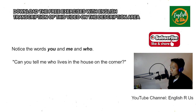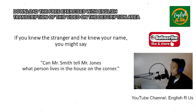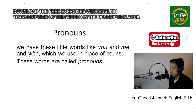You cannot call the stranger by name, or you do not know his name, and hence you say 'you.' And if you use your own name instead of 'me,' he would not recognize it, and you would both be puzzled. To find a substitute for that little word 'who' — if you knew the stranger and he knew your name, you might say 'Can Mr. Smith tell Mr. Jones what person lives in the house on the corner?' But this would sound very stilted, unnatural, and awkward. So we have these little words like 'you,' 'me,' and 'who,' which we use in place of nouns, and these words are called pronouns.